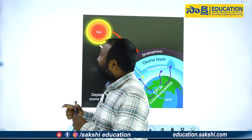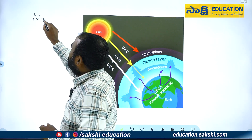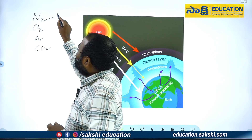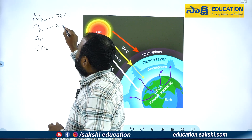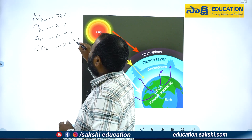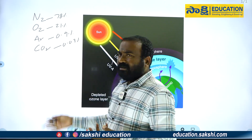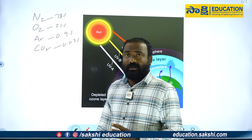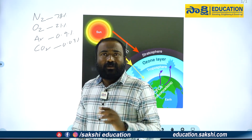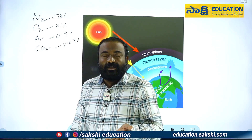We can talk about nitrogen in the top quantity. Oxygen is called argon, carbon dioxide — nitrogen is 78%, oxygen is 21%, argon is 0.9%, and carbon dioxide is 0.03%. We are talking about noble gases in the chemical industry.